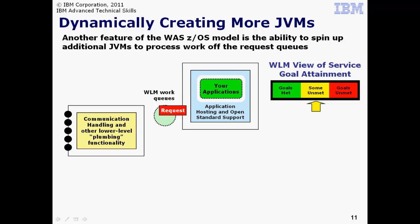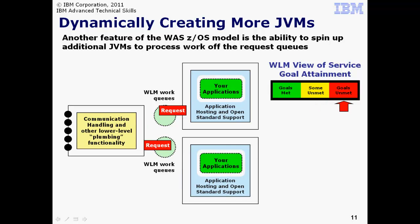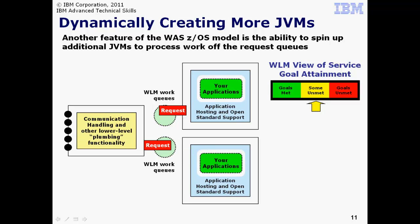ZWM sees that some of the goals are not being met quite as well as before. Still, ZWM takes no action. For the moment it sees things as in the yellow, but not yet requiring further attention. Then things really pick up. ZWM sees the goals now as unmet, so it takes action. It automatically starts up a second Servant region. That second Servant region has its own ZWM work queue. The controller is taking in the work as before, but now it has two Servants prepared to take the work and process it. So the controller distributes across the Servant regions. ZWM sees the results and determines the goals are back down to a manageable state.